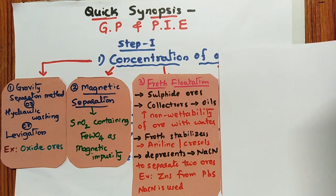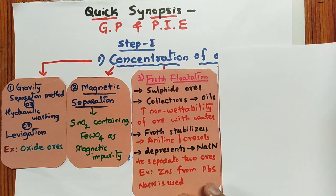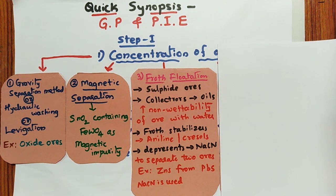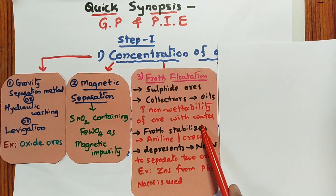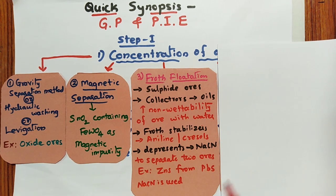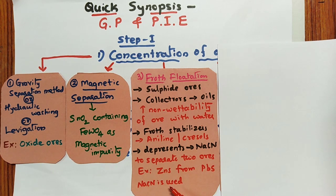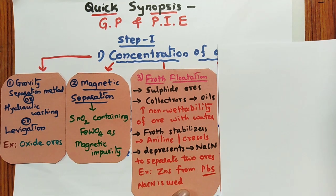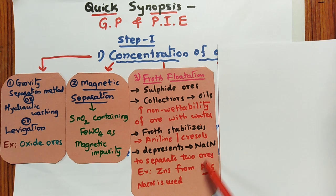The third method is froth flotation. Sulphide ores are used in froth flotation — very important. Collectors such as pine oil and eucalyptus oil are used to increase the non-wettability of the ore with water. Froth stabilizers like aniline or cresols stabilize the froth. Depressants are used to separate two sulphide ores — for example, if ZnS and PbS are both present, NaCN is used as a depressant, which allows PbS to mix with the froth while ZnS reacts with NaCN to form a soluble complex.